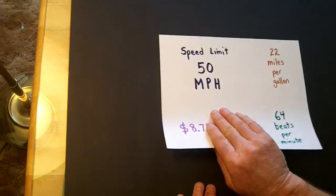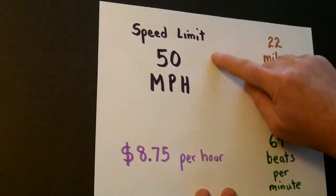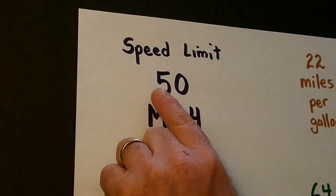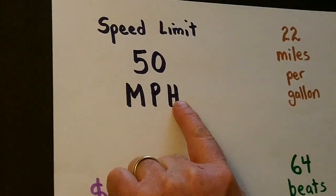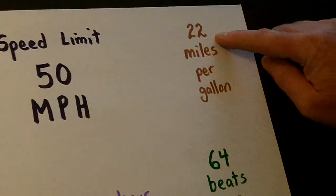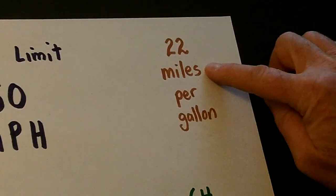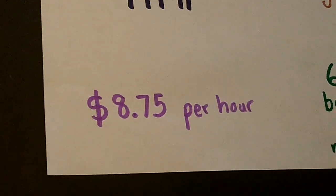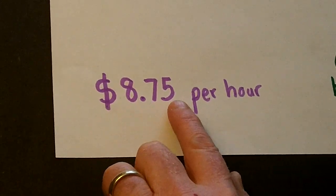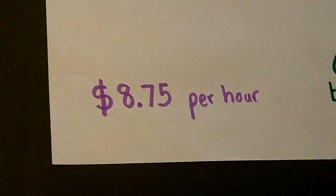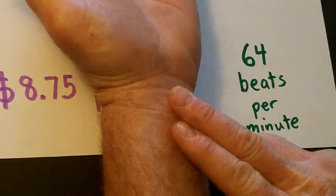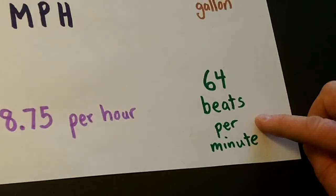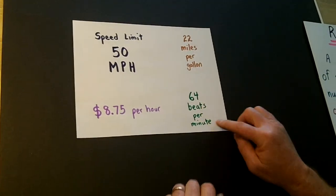Here are some common rates that some of you probably know about. You've seen speed limit signs — miles per hour is a rate, so 50 miles per one hour. Another example is 22 miles per gallon, meaning for every one gallon your car burns, it travels 22 miles. You also make $8.75 per hour at a certain job. And a common rate in medicine: a nurse checks your pulse — 64 beats per minute.